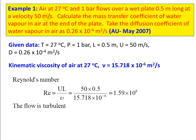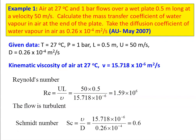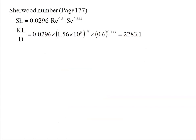Calculate the Reynolds number: Re = uL/ν = 50 × 0.5 / (15.718 × 10⁻⁶) = 1.59 × 10⁶. The flow is turbulent. Calculate the Schmidt number: Sc = ν/D = 15.718 × 10⁻⁶ / (0.26 × 10⁻⁴) = 0.6.